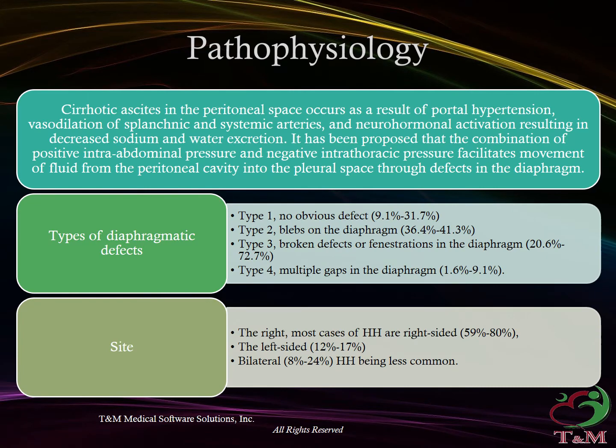Pathophysiology: cirrhotic ascites in the peritoneal space occurs as a result of portal hypertension, vasodilation of splanchnic and systemic arteries, and neurohormonal activation resulting in decreased sodium and water excretion. It has been proposed that the combination of positive intra-abdominal pressure and negative intrathoracic pressure facilitates movement of fluid from the peritoneal cavity into the pleural space through defects in the diaphragm.